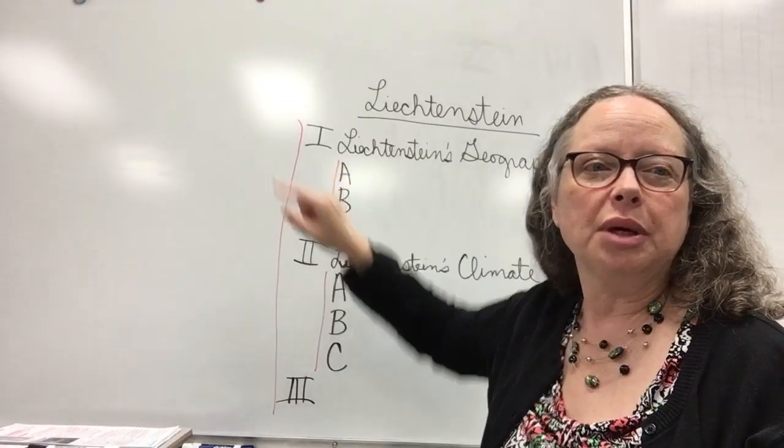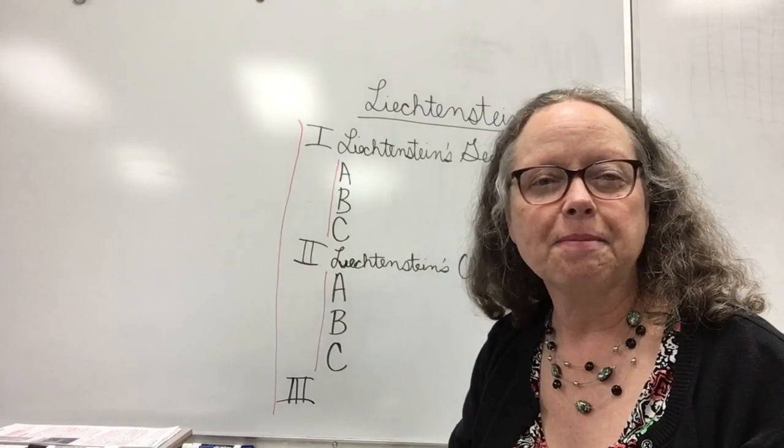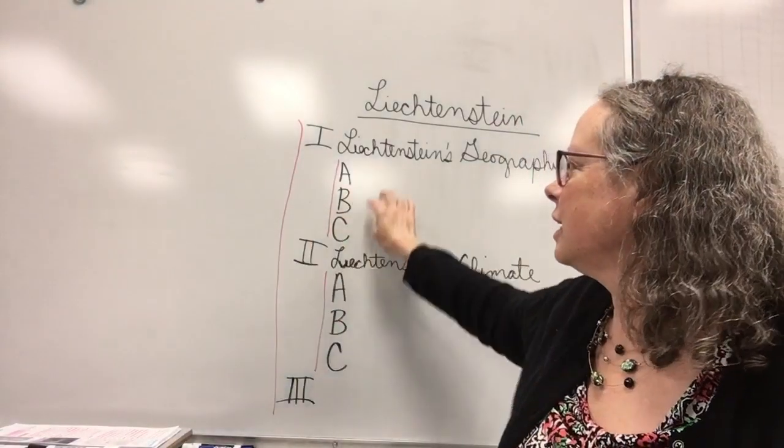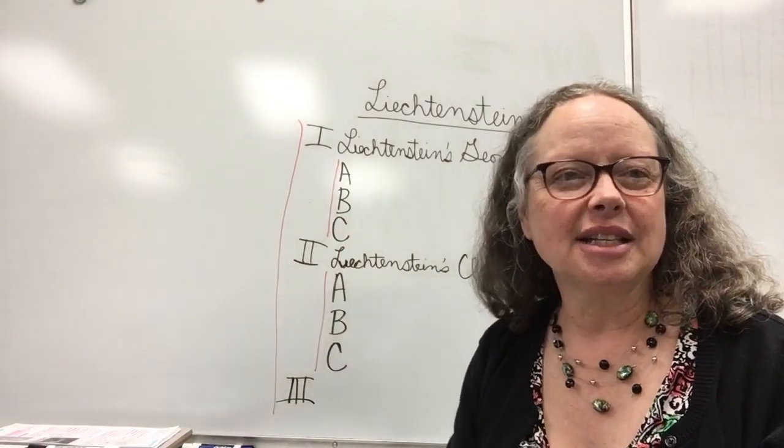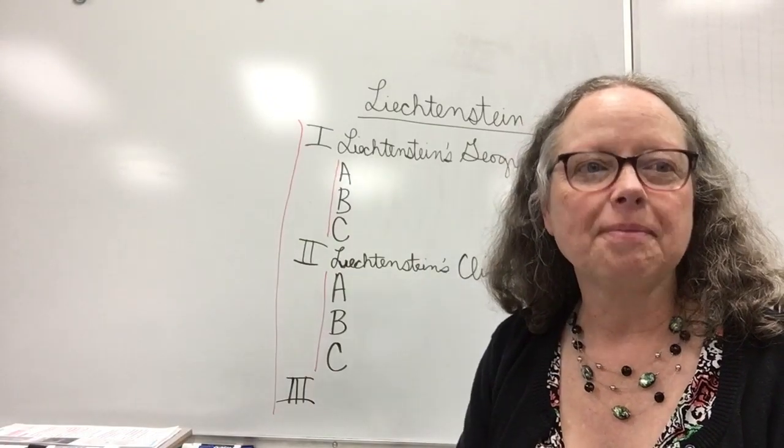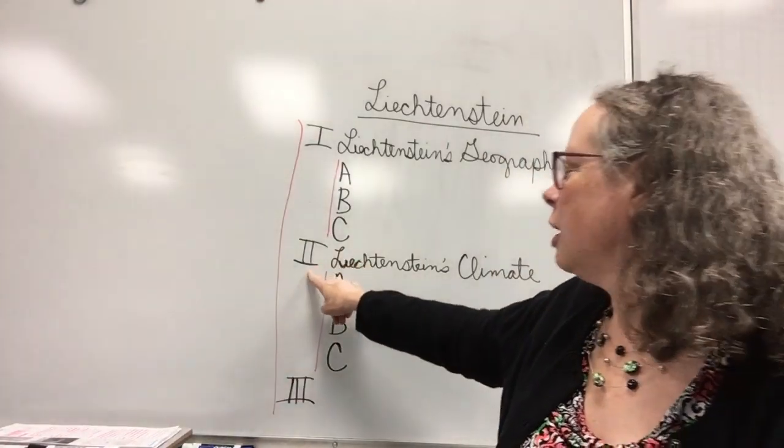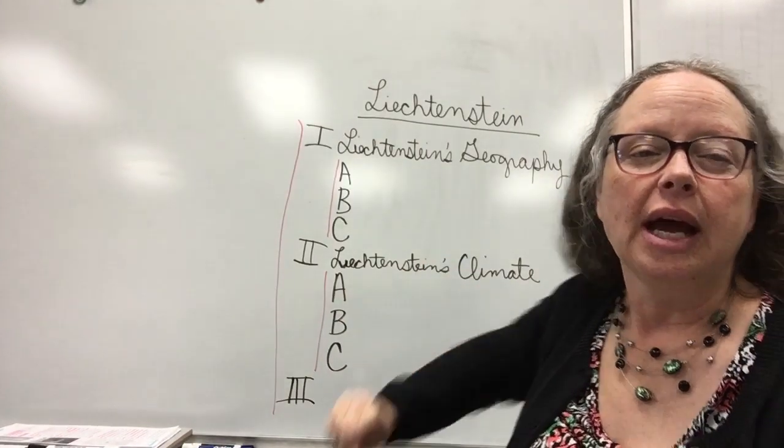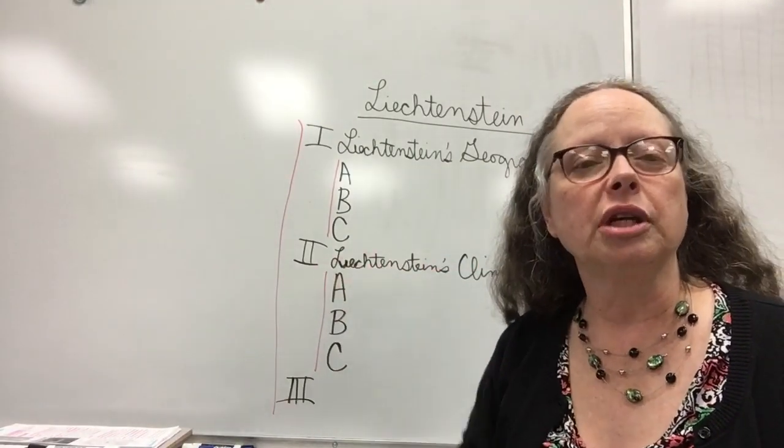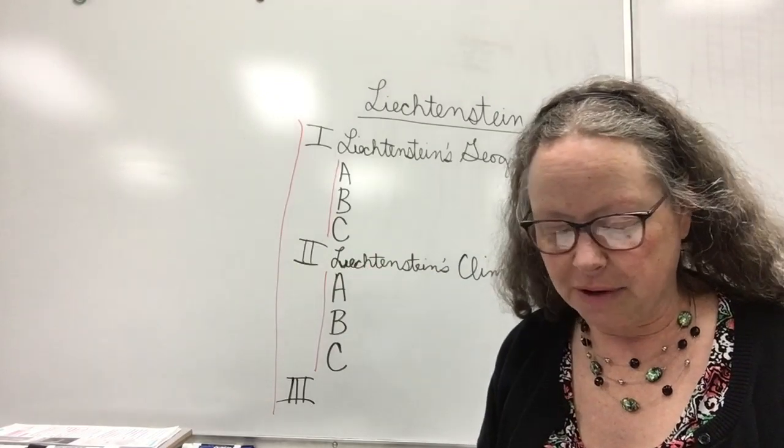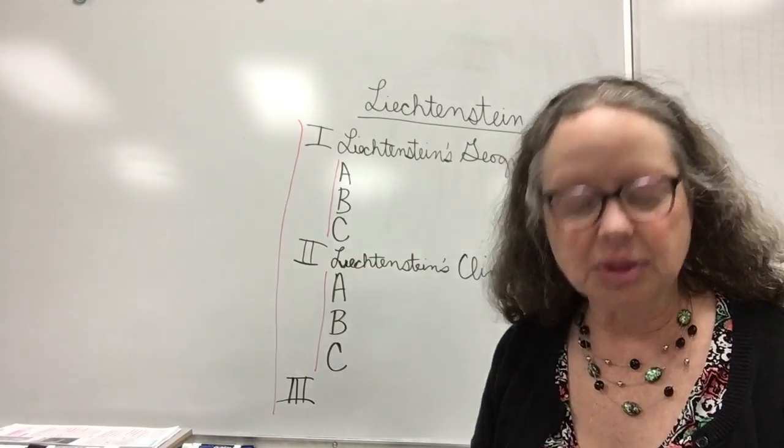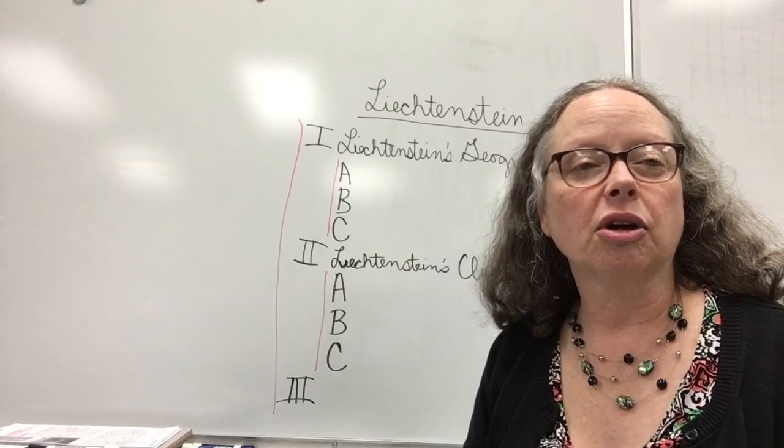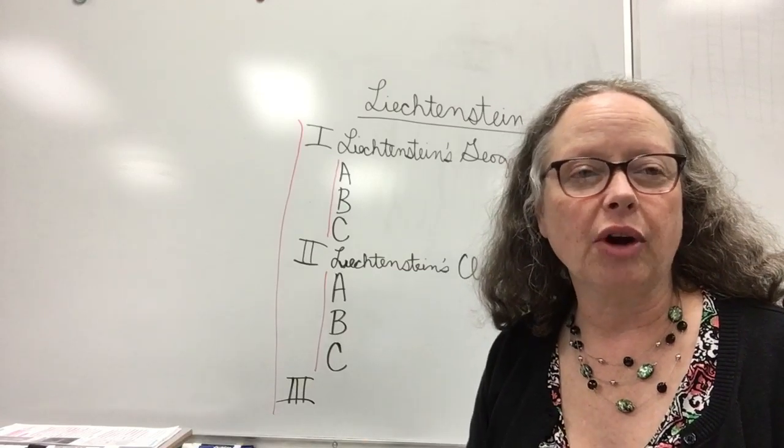This number one is going to be your first paragraph. After you have written these things down in complete sentences, interesting sentences, then you are going to go to your number two and write your paragraph about the climate, then number three about the customs and holidays, and then you're going to end with your last paragraph.